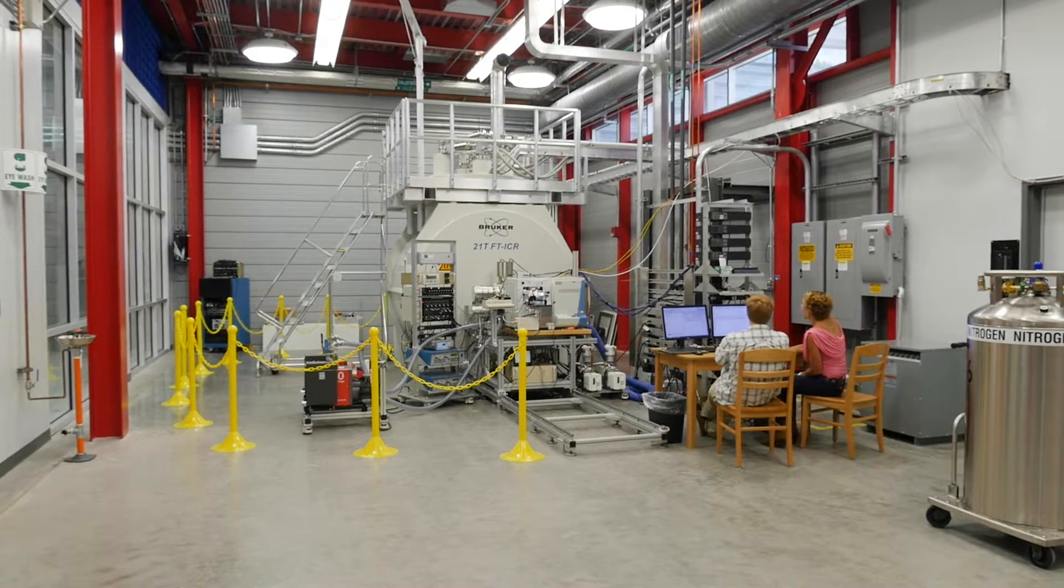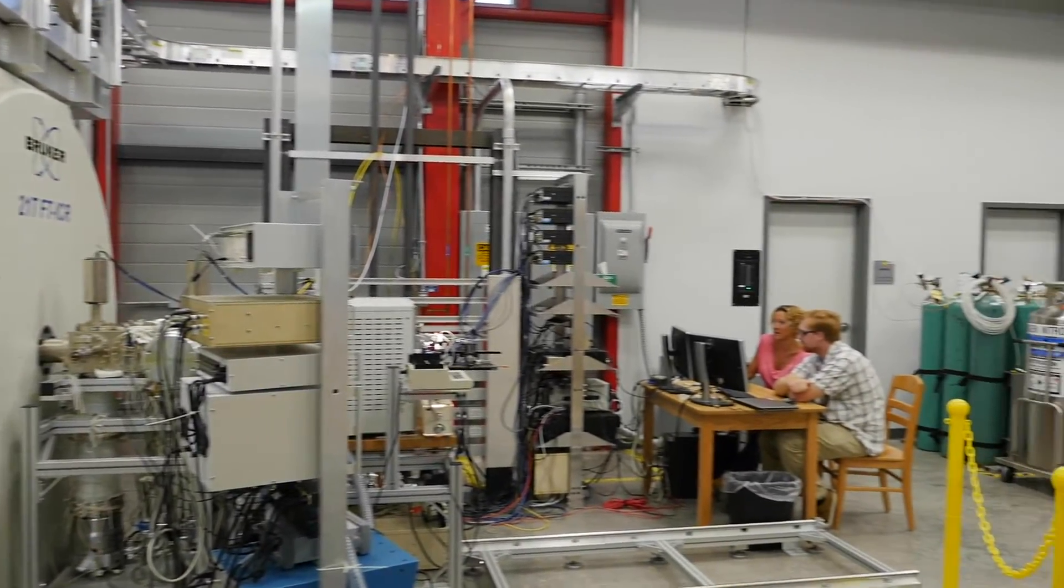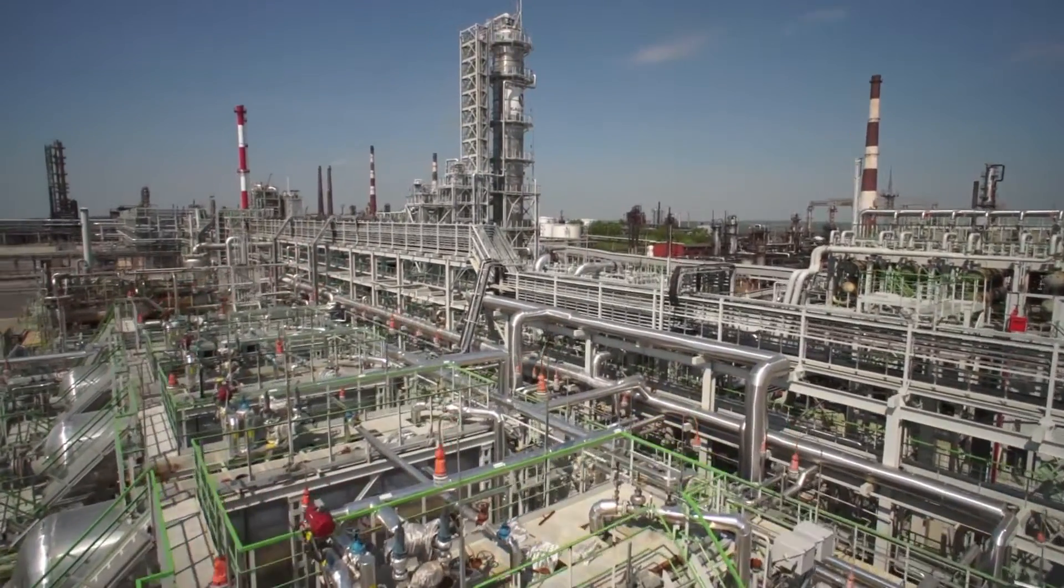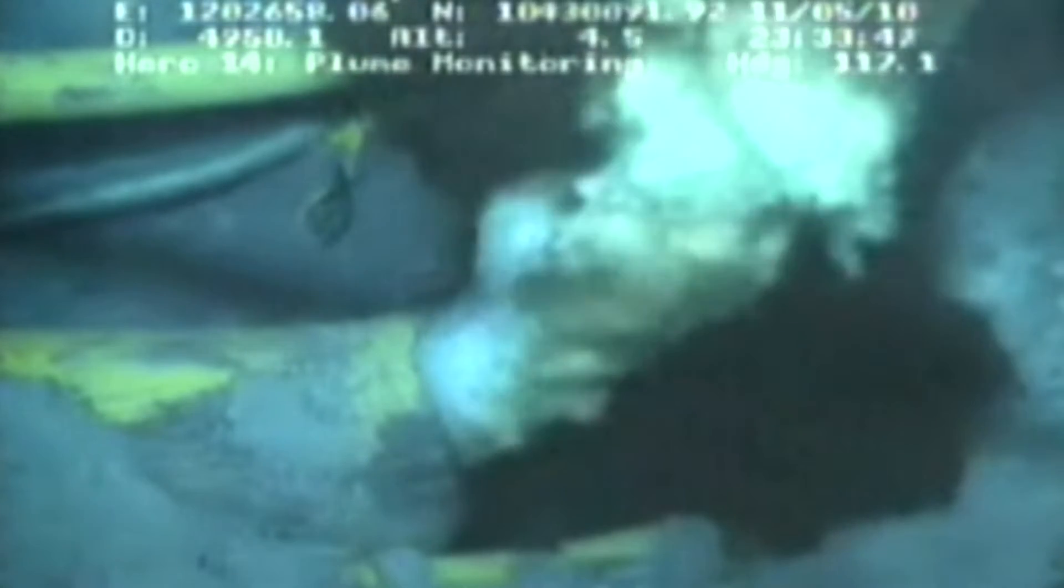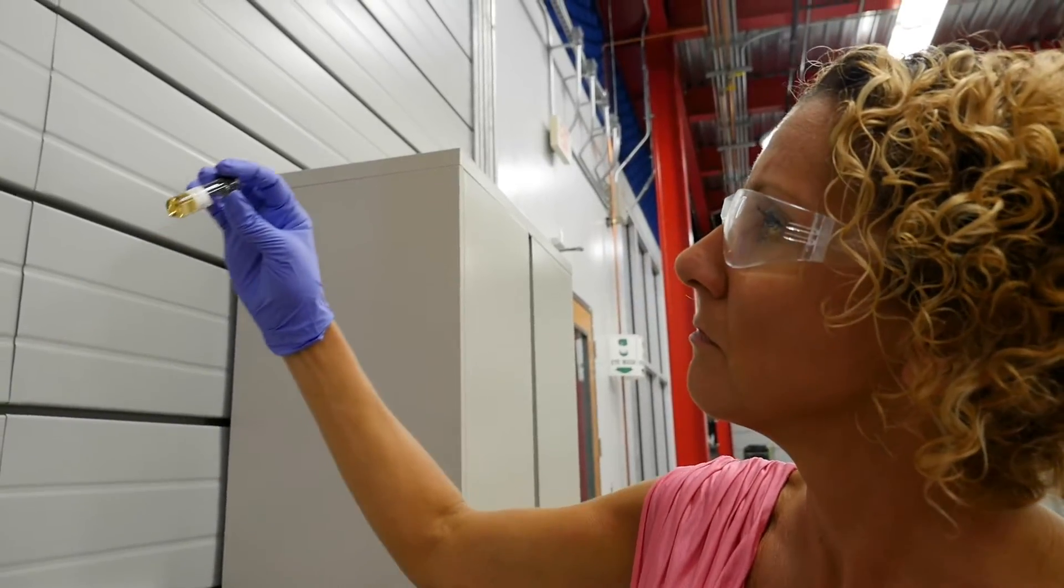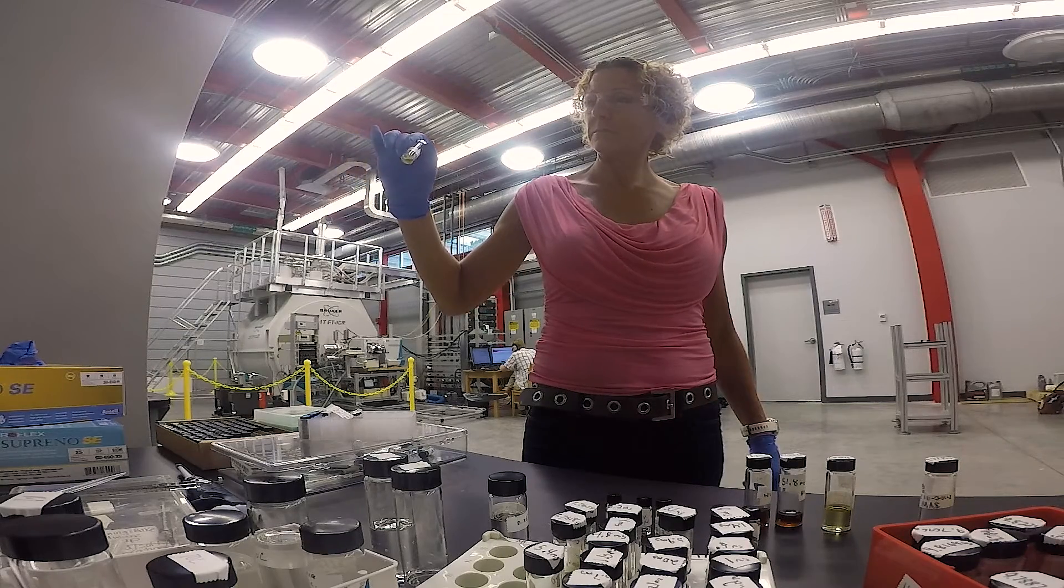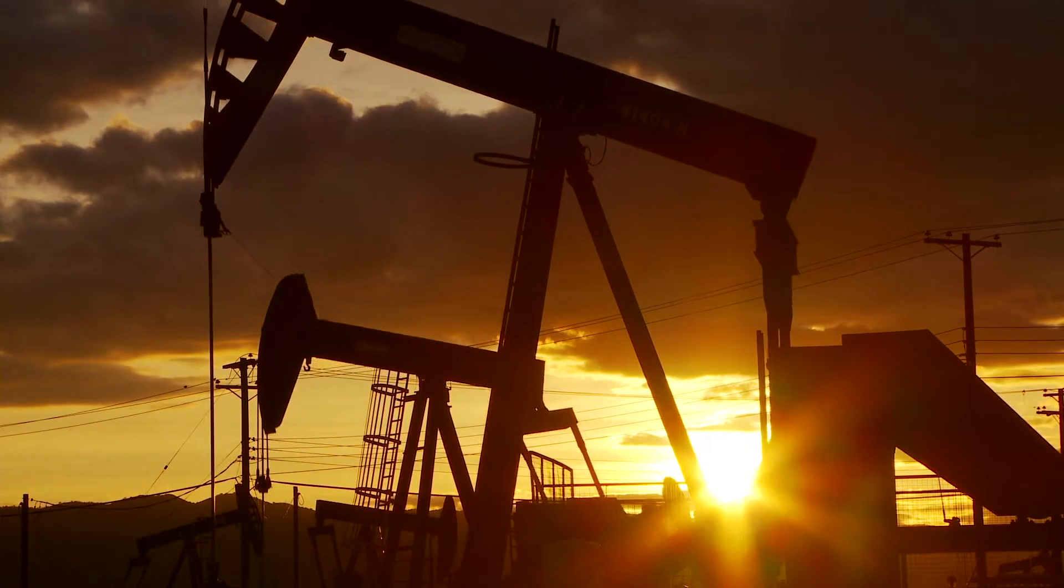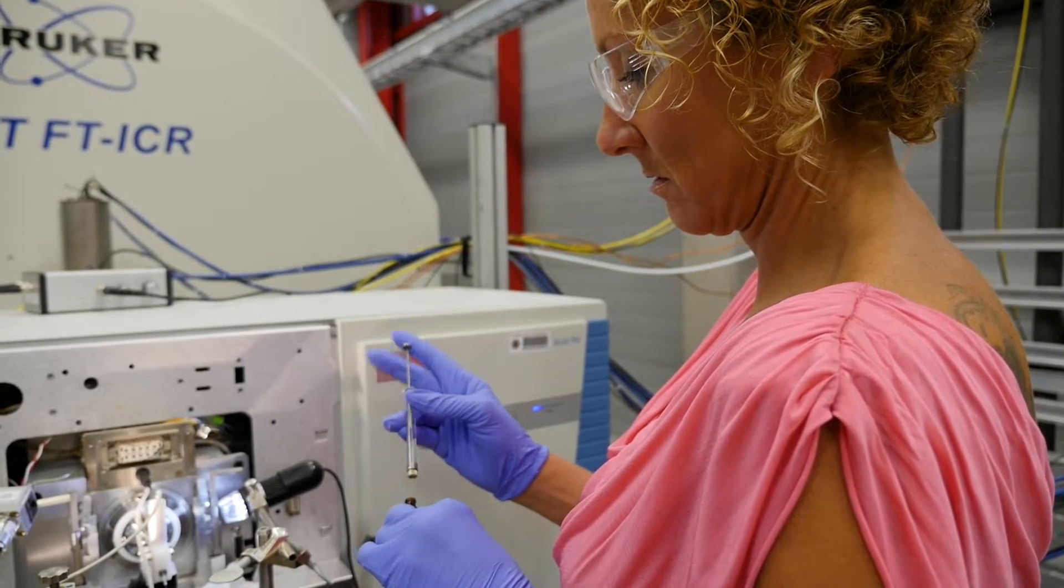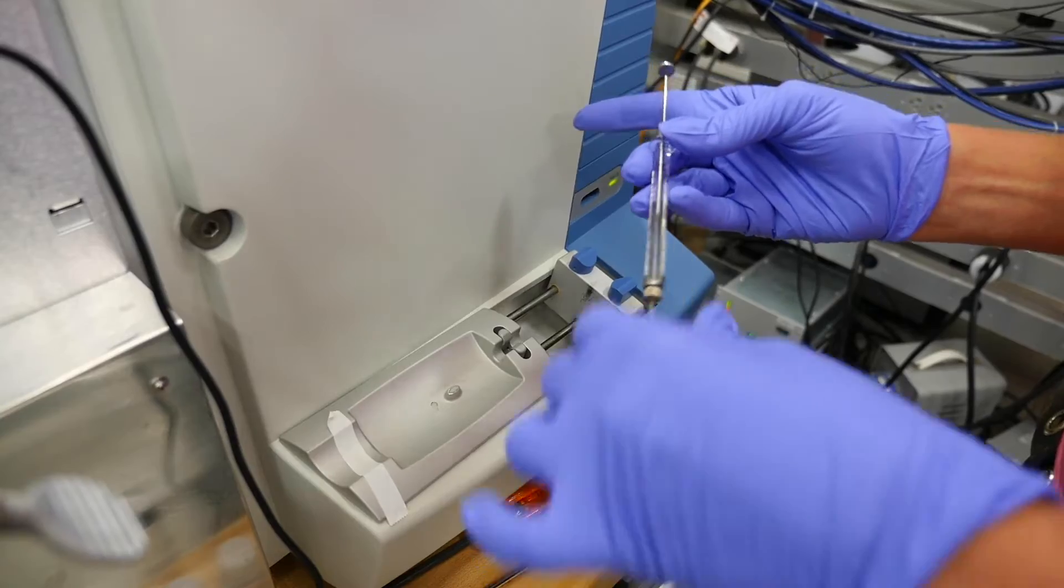Analytical chemist Amy McKenna is a staff scientist working on the ion cyclotron resonance magnet. She's all about oil, how to refine it more efficiently, and how to better clean it up when it spills. Every crude oil in the world is unique. It is a function of the temperature, the pressure, and the organisms that died and created that mixture. Petroleum is what's called a complex mixture. Think on the order of 40,000 different chemical compounds in every drop.